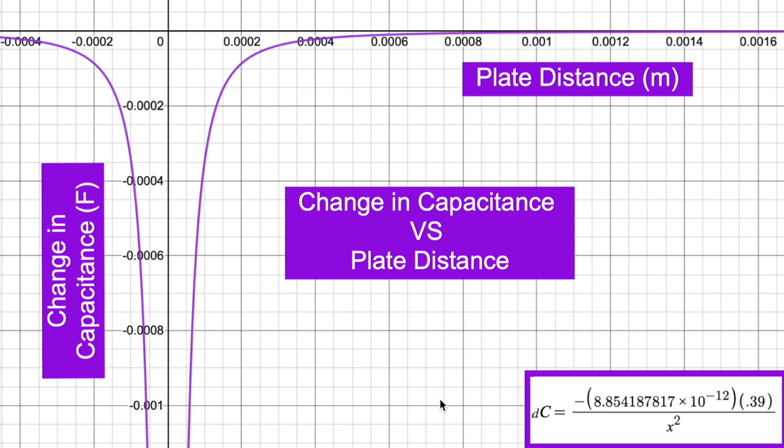From this graph, we can see that there are two ways to increase sensitivity or the change in capacitance. The first way is to increase the area to allow for a larger maximum capacitance and a larger change in capacitance. Capacitance and change in capacitance is linear to area, so as the area increases, the capacitance and change in capacitance increase linearly as well.